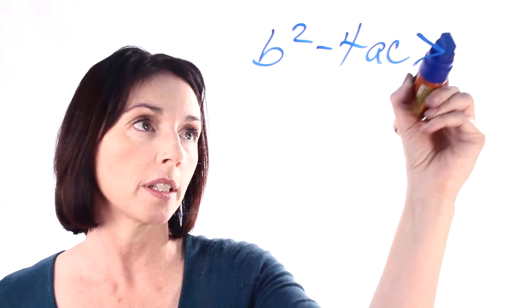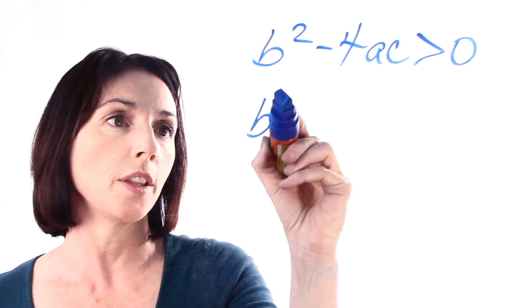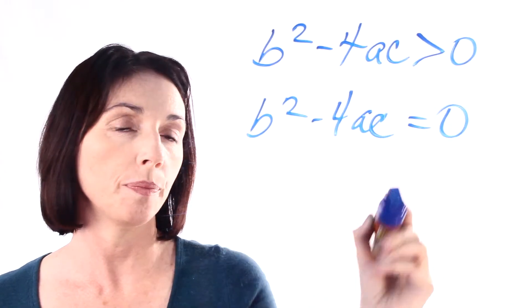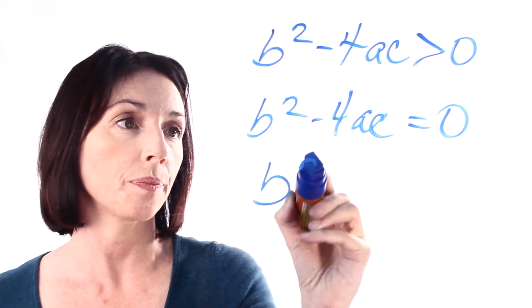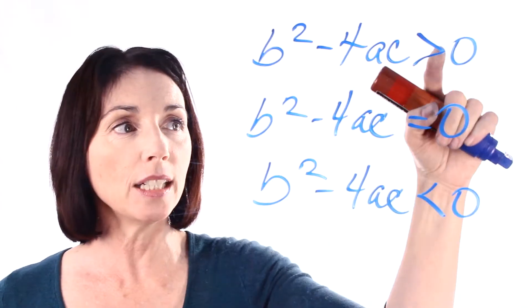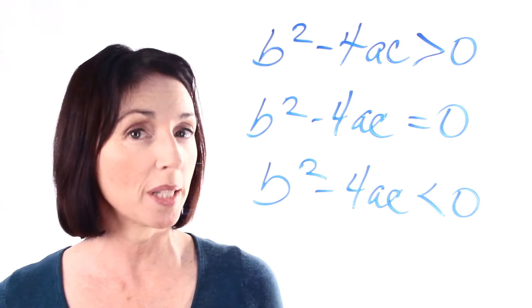One is that this is greater than zero. Another possibility is that it's equal to zero. And the third possibility is that it is less than zero. And each one of these tells you something very specific about the roots.